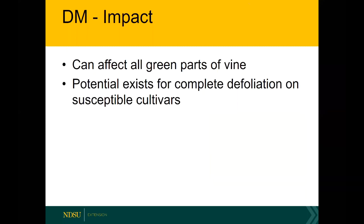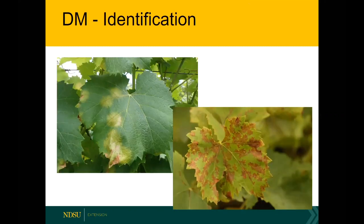Downy mildew can affect all green parts of a vine, and there is potential for complete defoliation on susceptible cultivars. It's really more of the plant's fault — downy mildew is an obligate parasite similar to powdery mildew, but when a plant senses that a leaf is infected, it will drop that leaf. Infections start as a general, somewhat diffuse but circular, bruised-looking chlorotic area. As the infection progresses, those areas will turn more necrotic and become harshly angular.